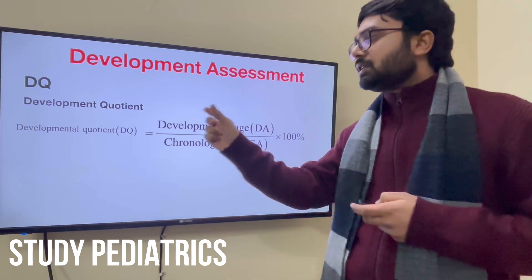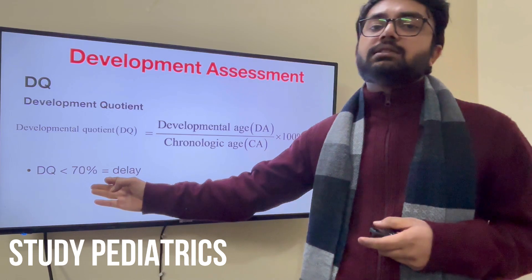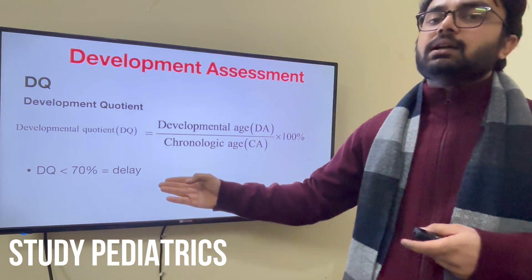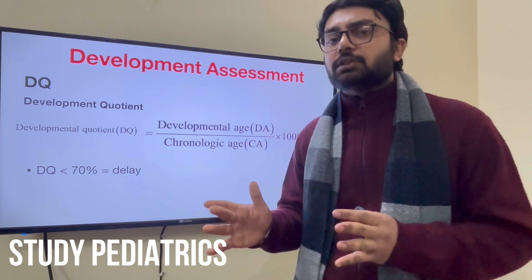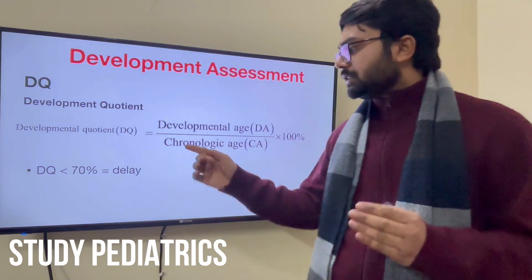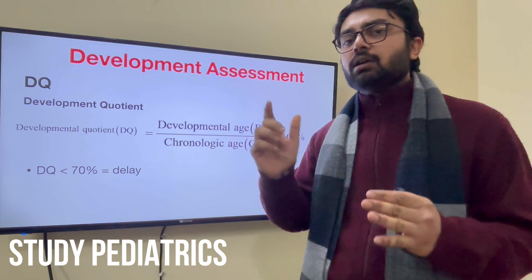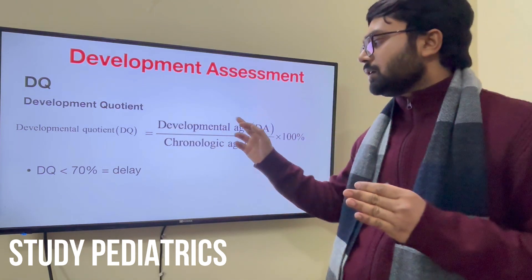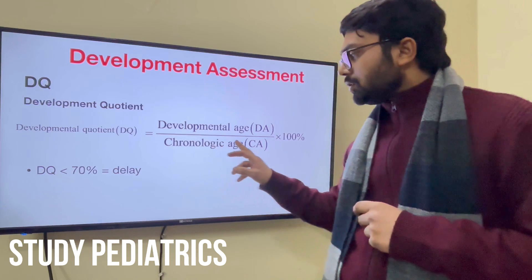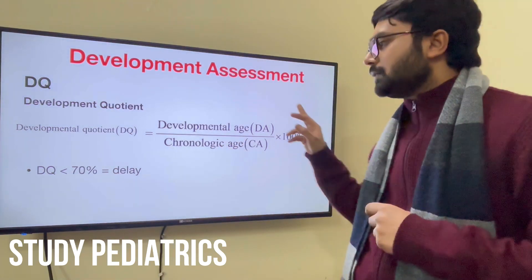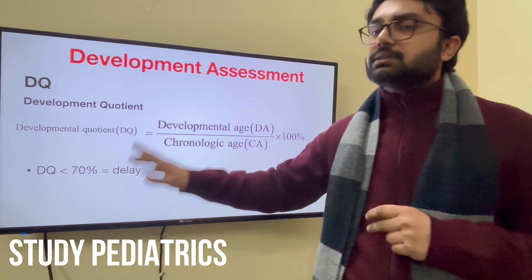The Development Quotient comes as a percentage number. If the DQ is less than 70%, that means there is delay. For example, if a child comes to a clinic at 6 months of age, the child is chronologically 6 months, but the development he is showing is only neck holding. The developmental age will be 3 months. So 3 divided by 6 into 100 comes around 50%, so the DQ is less than 70% — that means it is delay.